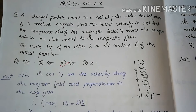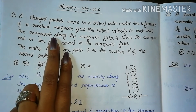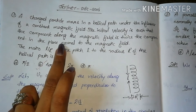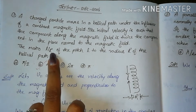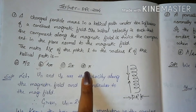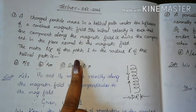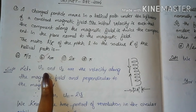The first question: a charged particle is moving in a helical path under the influence of a constant magnetic field. The initial velocity is such that the component along the magnetic field is twice the component in the plane normal to the magnetic field. We have to find the ratio of the pitch L to the radius R of the helical path. For velocity we consider V parallel and V perpendicular.